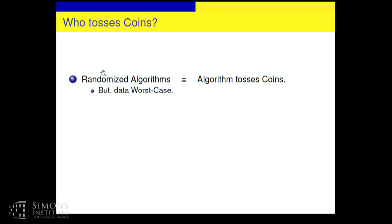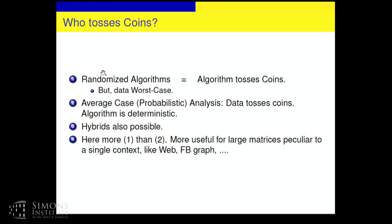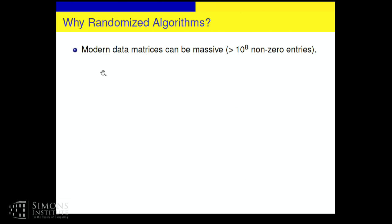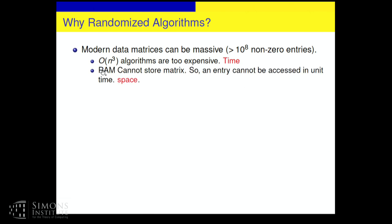This is simple for a general audience. The algorithm tosses coins. That's randomized algorithms, but average case would have been a probabilistic analysis where the data tosses coins. Here, mostly the algorithm will toss coins. The data won't toss coins. Now, why randomized algorithms is, again, a simple intro, but there are two points. Perhaps one of them is missed sometimes. First of all, saving time. N cubed time is expensive for matrix algorithms for large N, but also space. In the traditional algorithm setup, we assume that the data, the matrix or the graph, is given and in RAM, and in random, in unit time, you can access one edge or one entry of the matrix. Not so when data resides outside because it's too big. Time and space are both considerations.